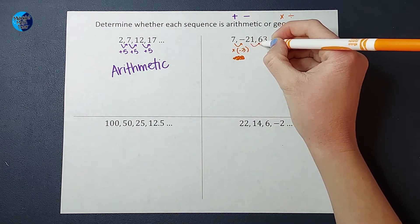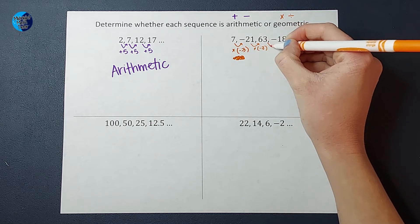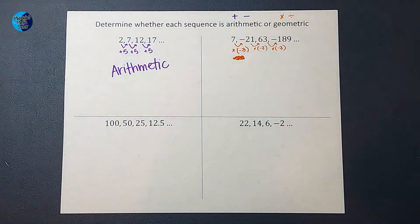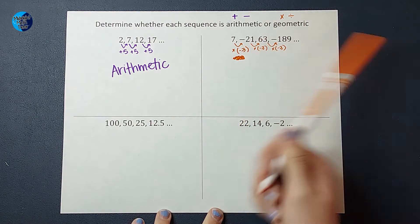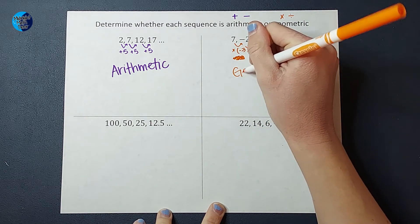So then if I multiply by a negative three, that gives me a positive 63. Multiply by a negative three, and that gives me negative 189. So I was multiplying by a negative three each time. And again, I could keep going. So since it's multiplying, this is a geometric sequence.